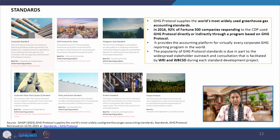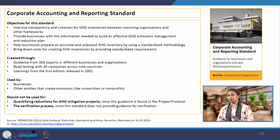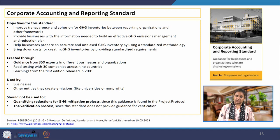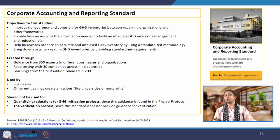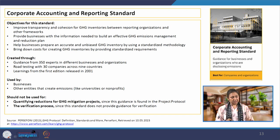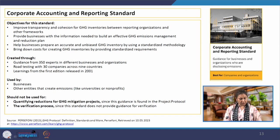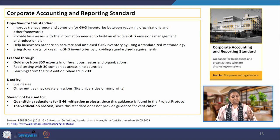These are the 7 standards covered as part of GHG protocol. We will quickly go through each one, and I want to emphasize what is and is not covered. The corporate standard — the corporate accounting and reporting standard — is a kind of guide for businesses and organizations that are disclosing emissions. More and more corporates and businesses are coming forward to report their emissions. The objectives are to improve transparency and cohesion, and it helps businesses prepare an accurate and unbiased GHG inventory using a standardized methodology, and to bring down the costs for creating GHG inventories.